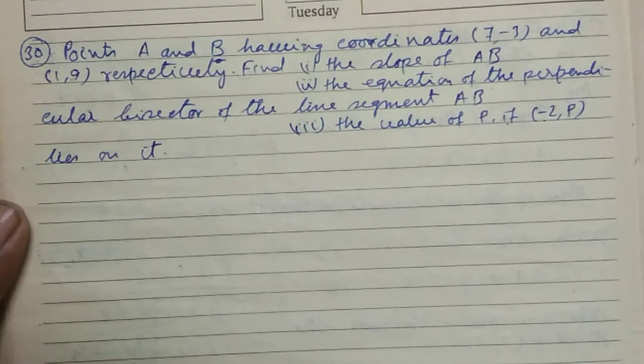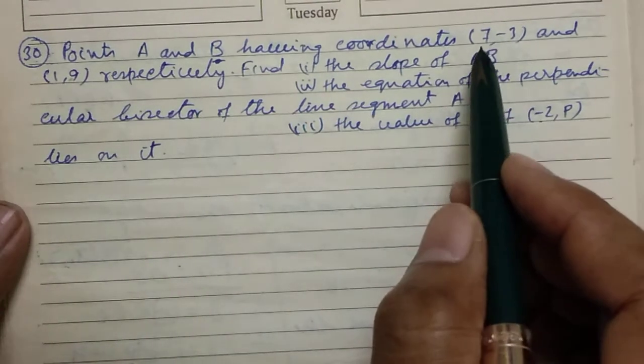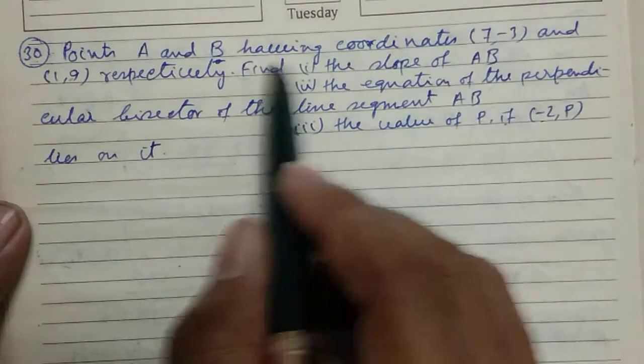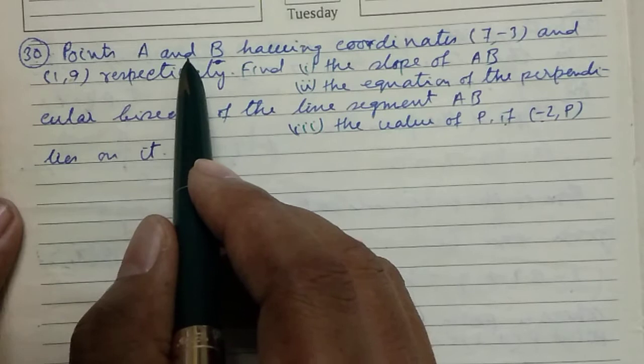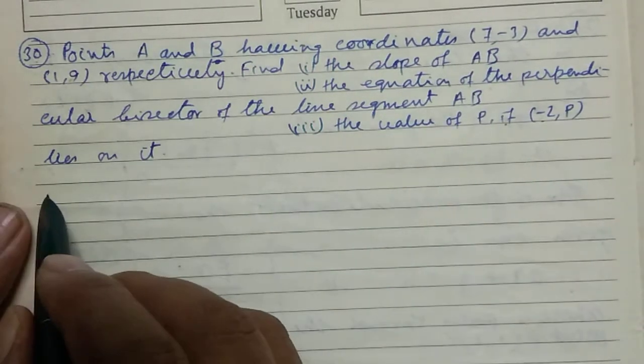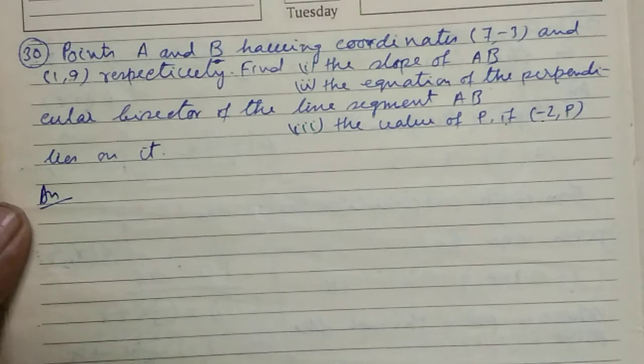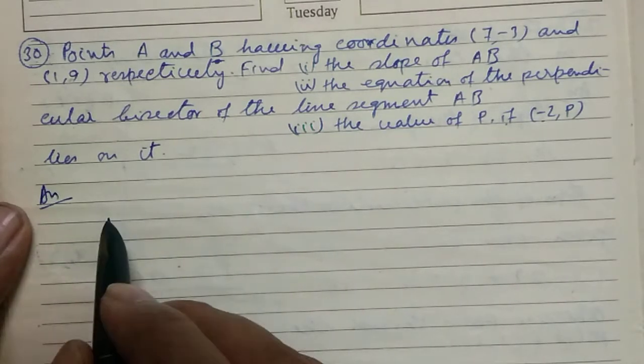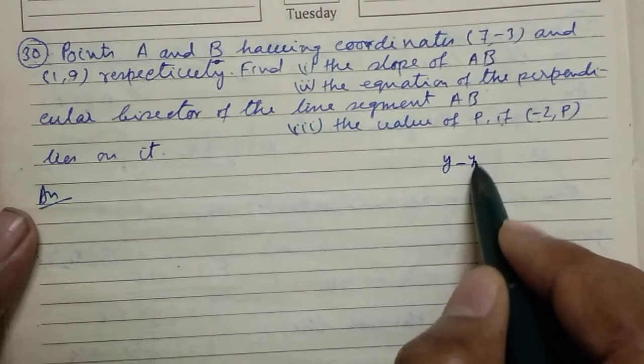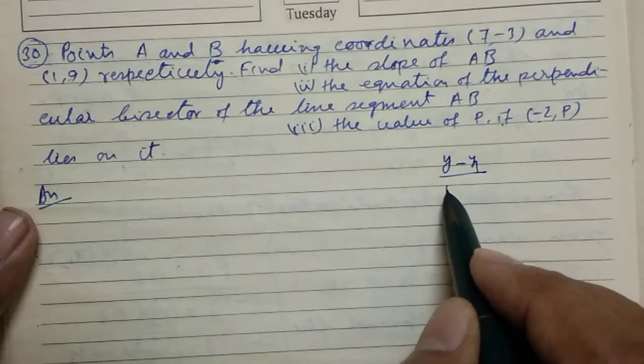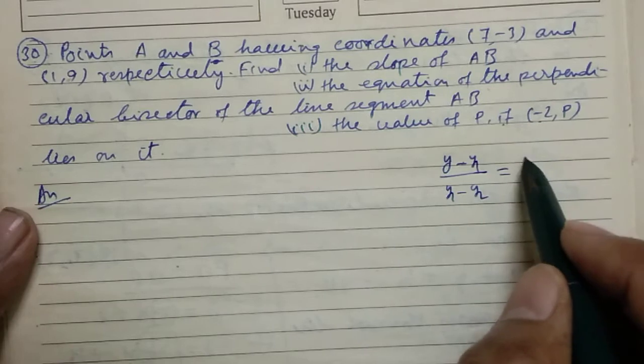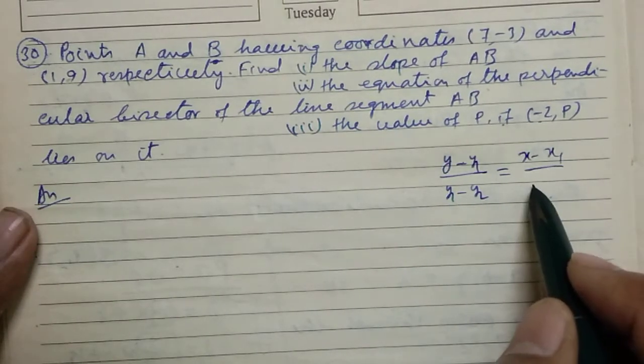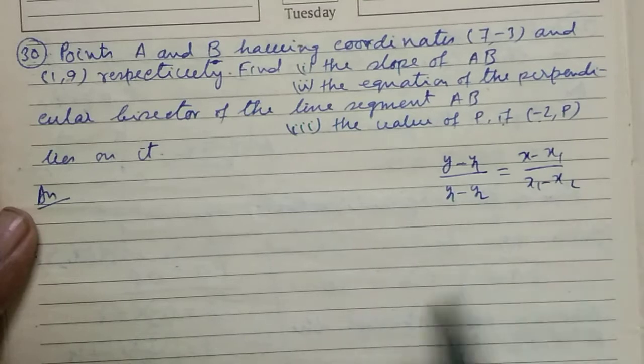We can solve this problem in many ways. At first, we determine the equation of the line passing through A and B whose coordinates are given. We know that the point-point formula which is (y - y1)/(y1 - y2) equals to (x - x1)/(x1 - x2).